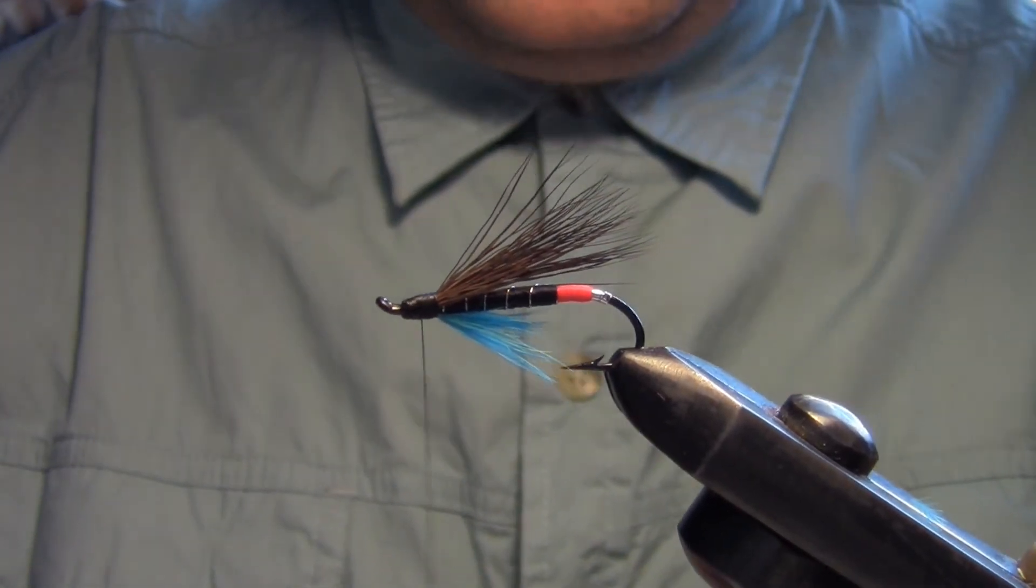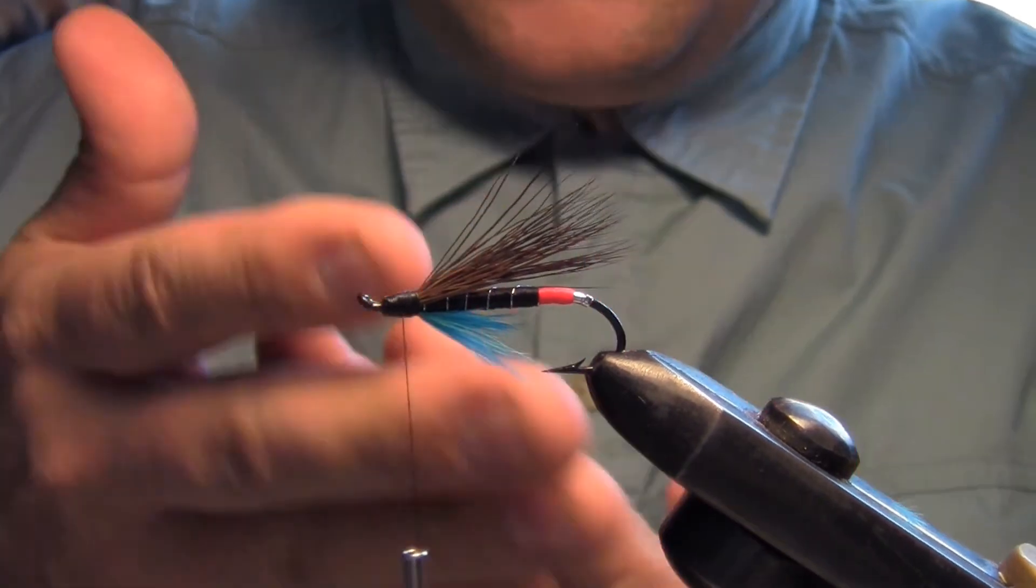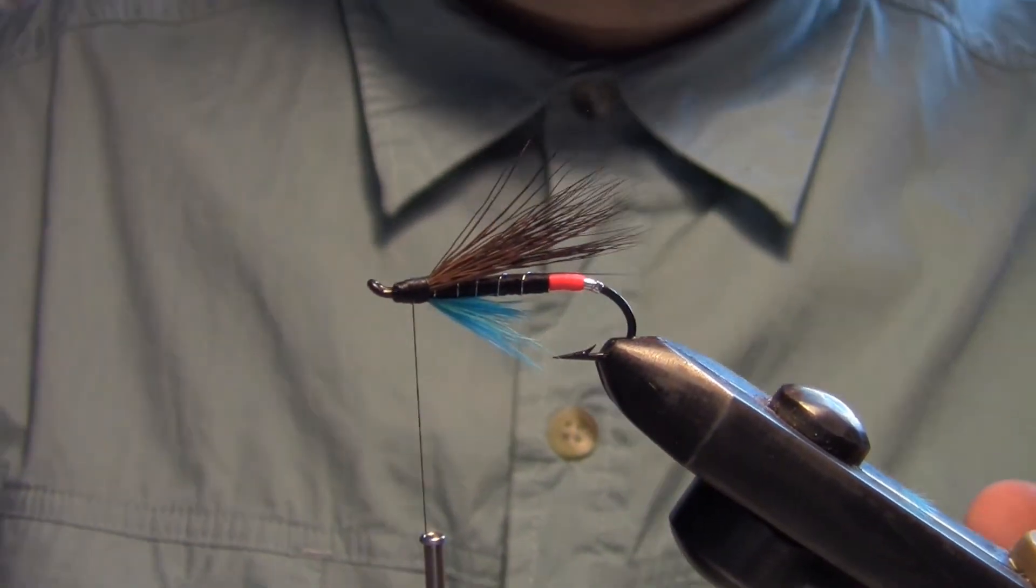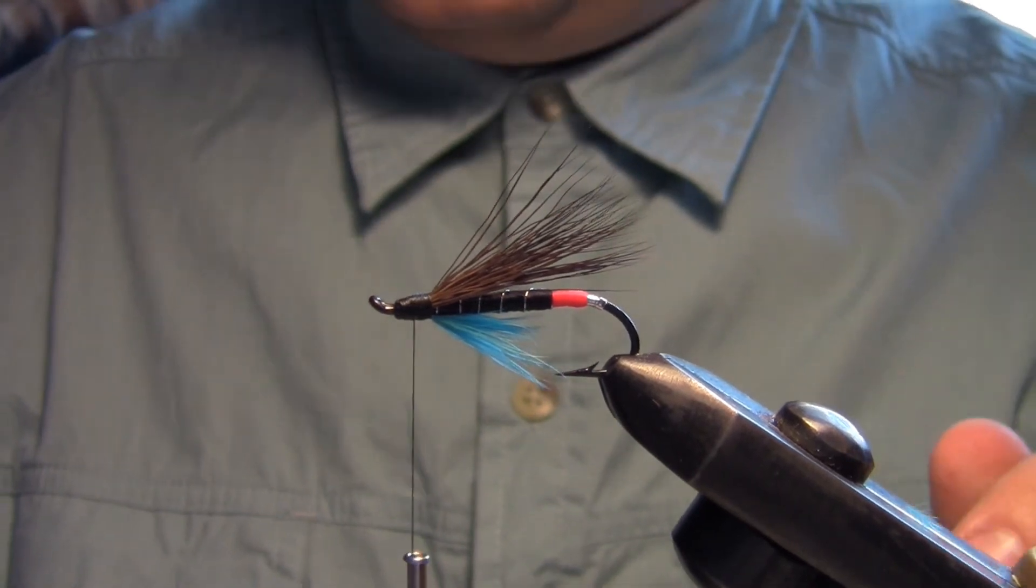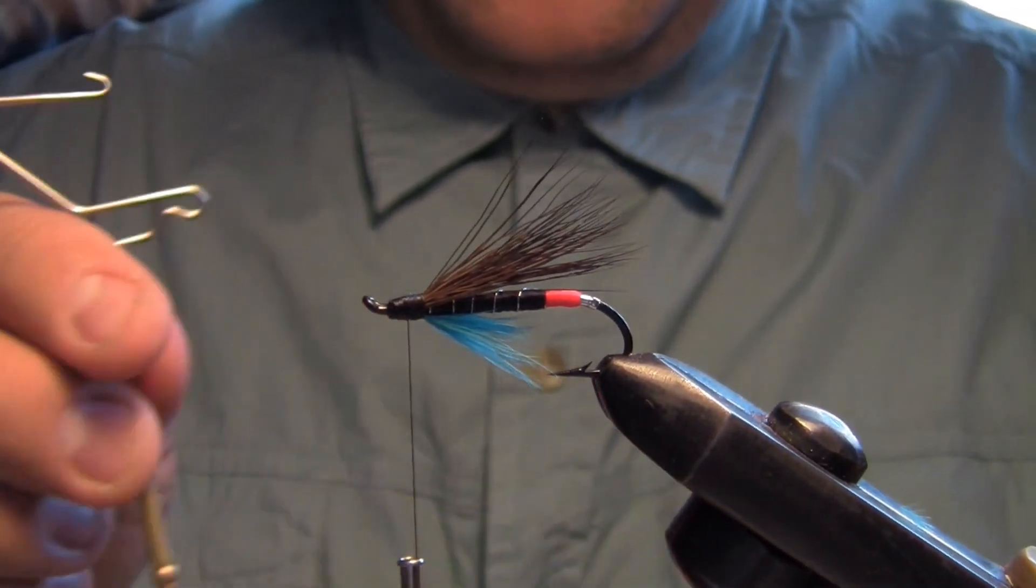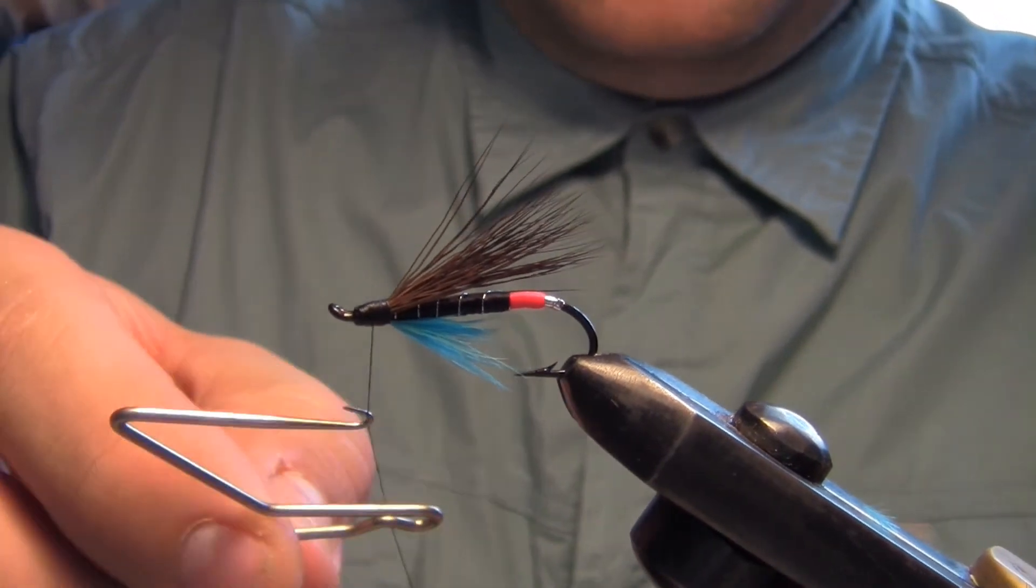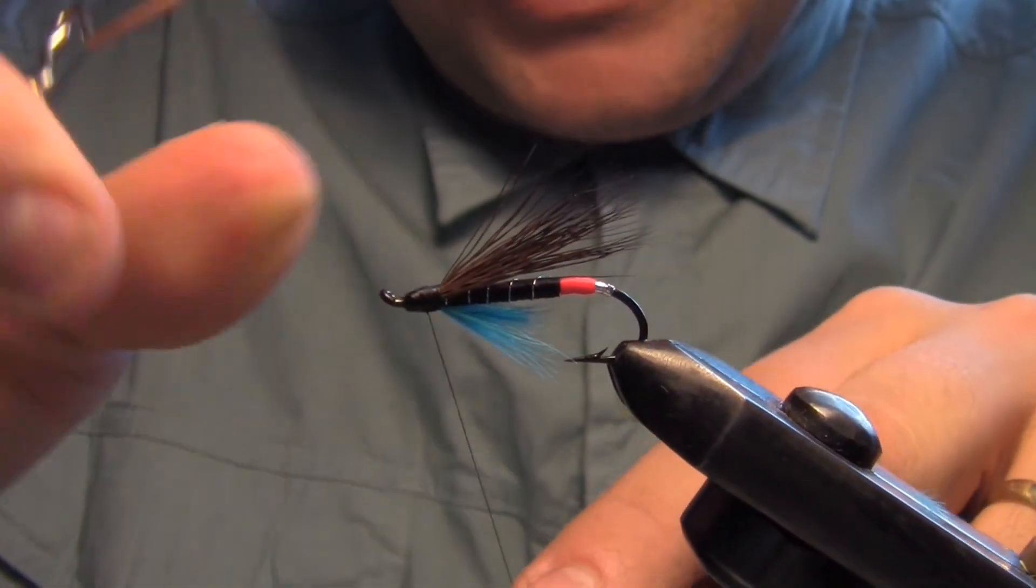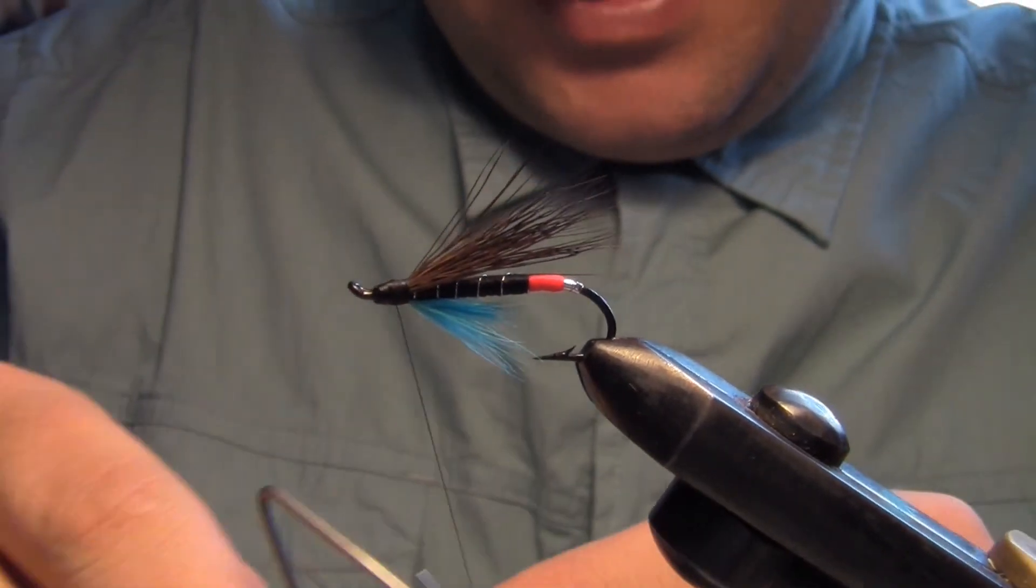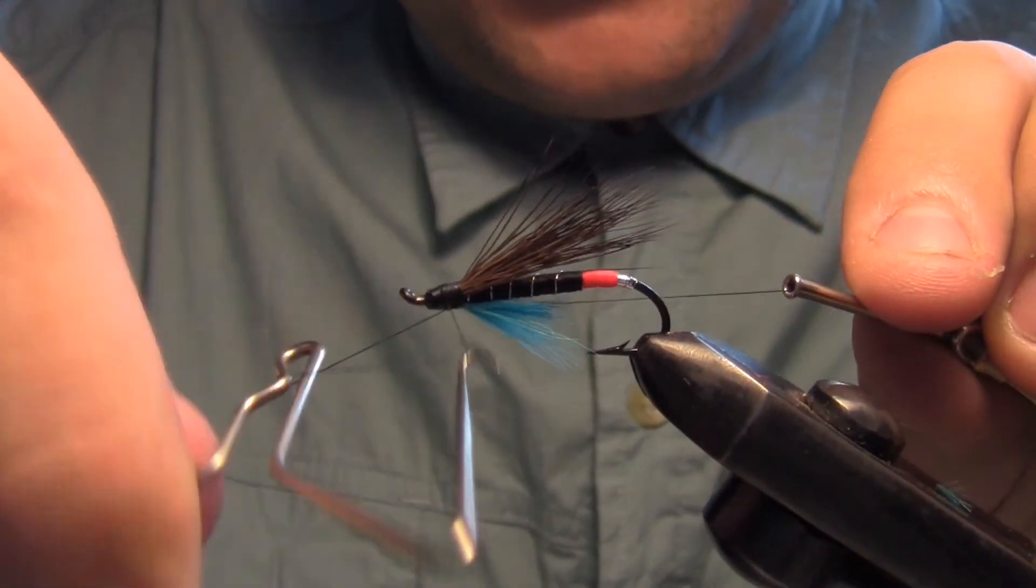I find I get the head too big sometimes. We're going to give it a little whip finish here. Even with that wing, I could have went with less. Maybe the next few that I tie, I'll have less hair on them.